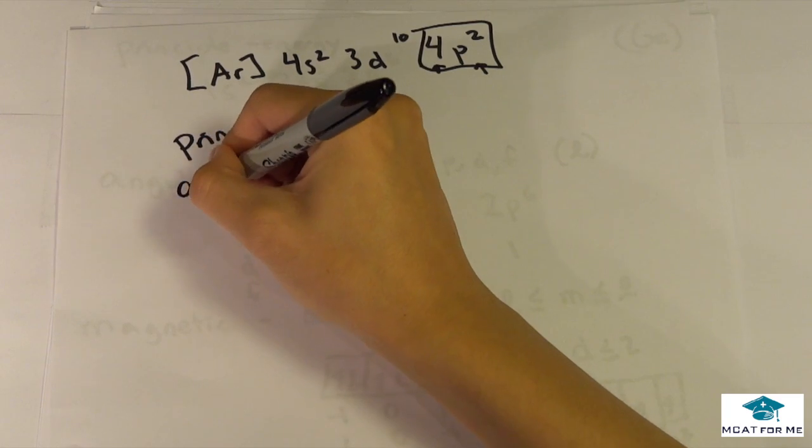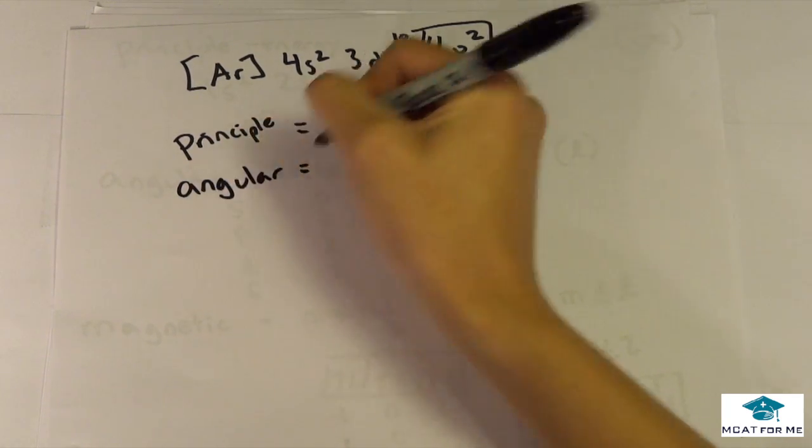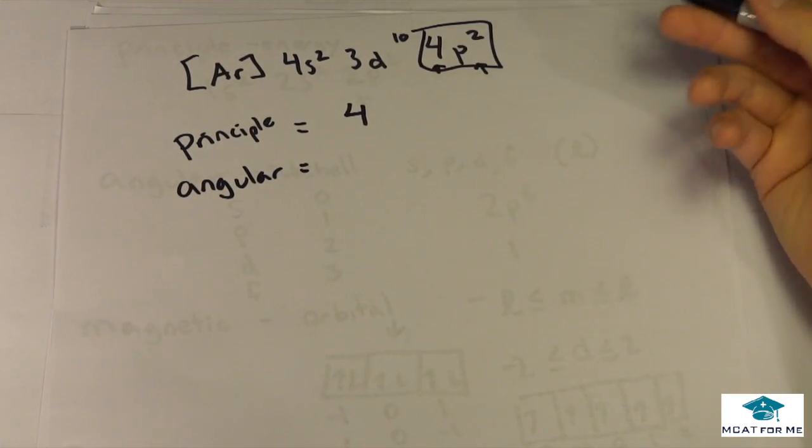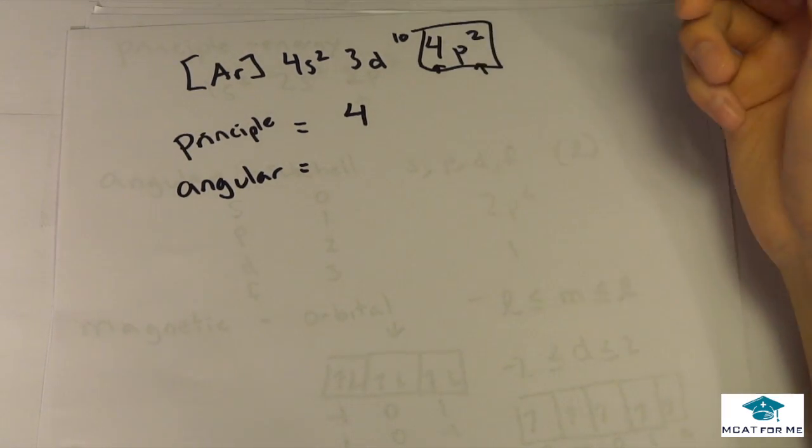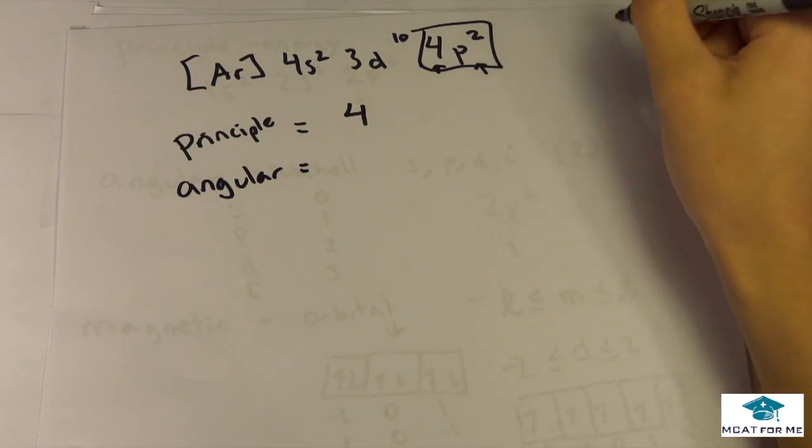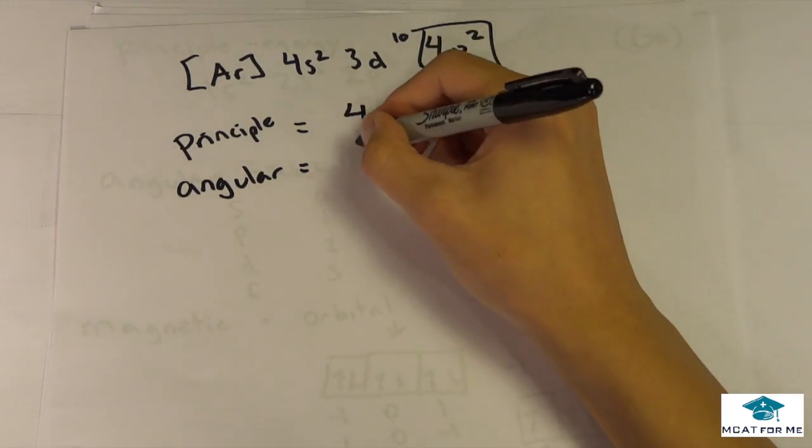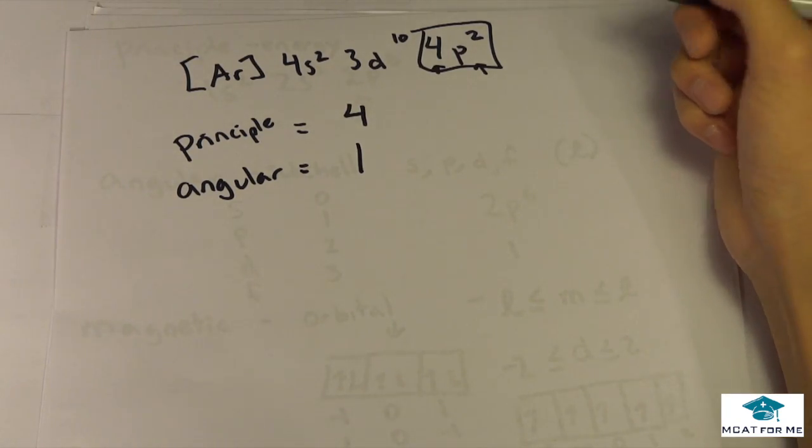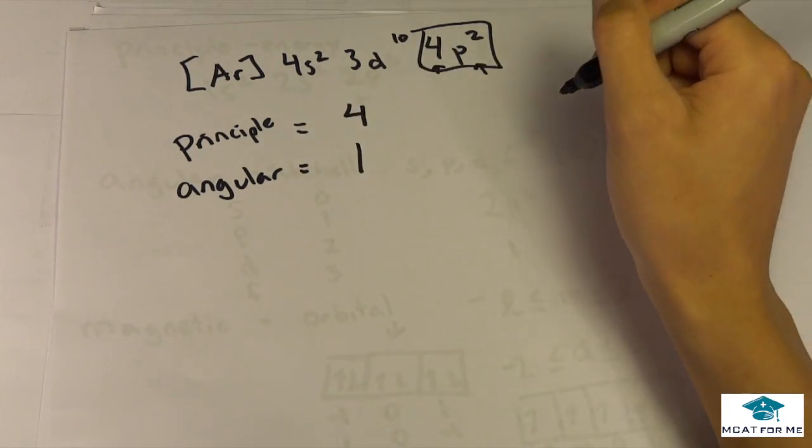And what would the angular quantum number? The angular quantum number was, is it in the S, the P, the D, or the F? We know it's in the P. And remember, S was 0, P was 1. So P is 1. And the angular quantum number is 1.